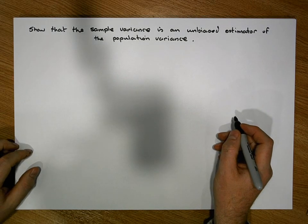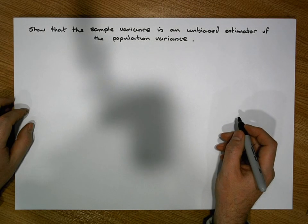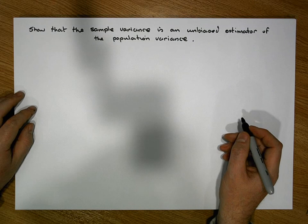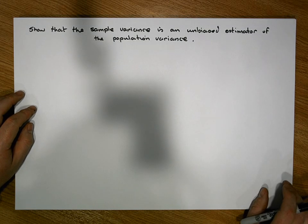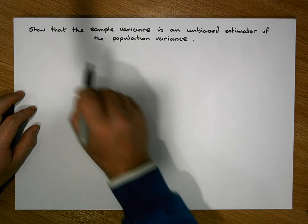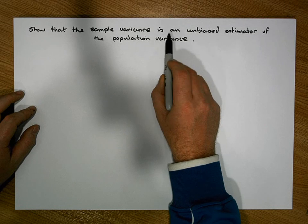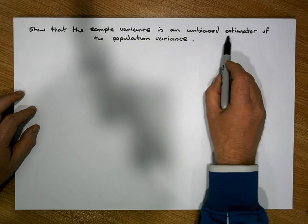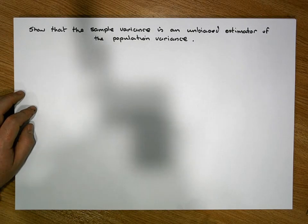Hi guys, this is Jonathan Lambert with the Mathematics Development and Support Service at the National College of Ireland. In this short video we are going to attempt to show that the sample variance is an unbiased estimator of the population variance.